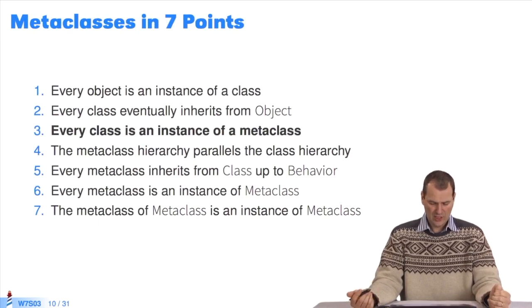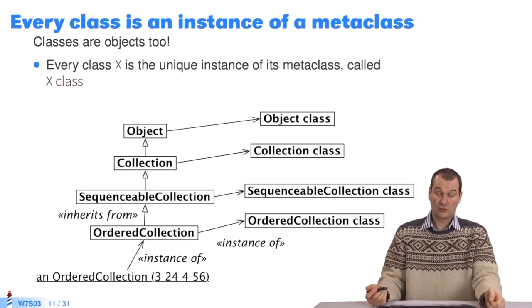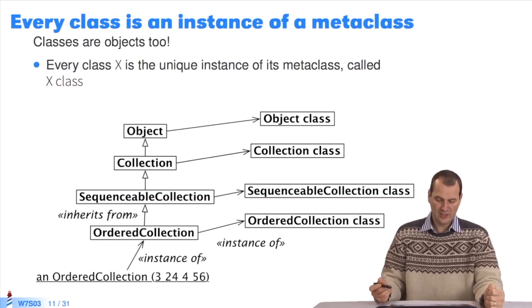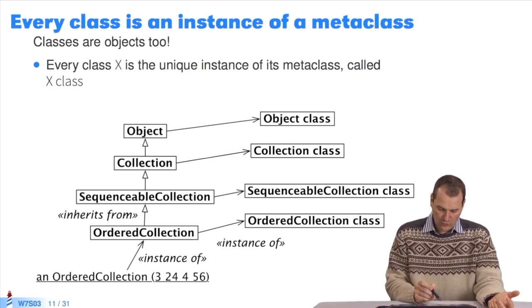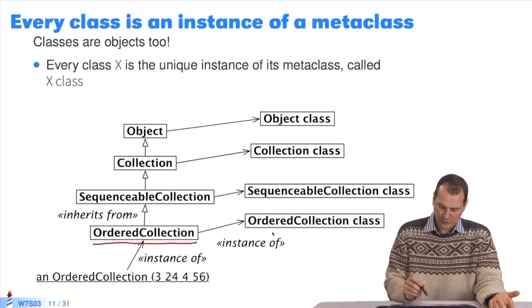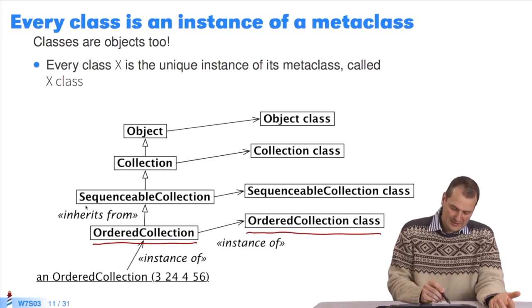Returning to our list, every class is an instance of a metaclass. We explained this in an earlier course. A class X is the sole instance of the metaclass named X class.